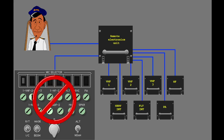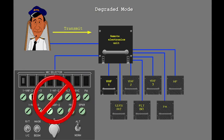If the audio control panel or the remote electronics unit fails, the captain sets the alternate normal switch to alternate. The captain's system then operates in the degraded mode. Now set the alternate normal switch to alternate. In the degraded mode, the captain can only communicate on the VHF1 radio. None of the interphone or passenger address systems are available.